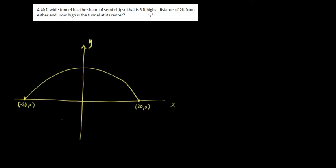At 2 feet from either end, the height of the tunnel is 5 feet. So kung 2 feet from either end, so dito na tayo sa kabilang side na to. Kung 2 feet from this end, 18. Tama? This is 18. And it is 5 feet. This is 5. So therefore, this point is 18, 5.